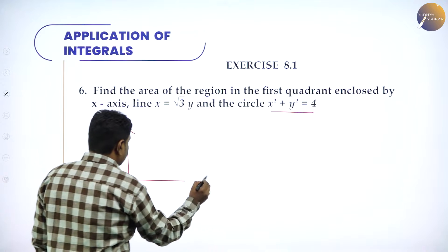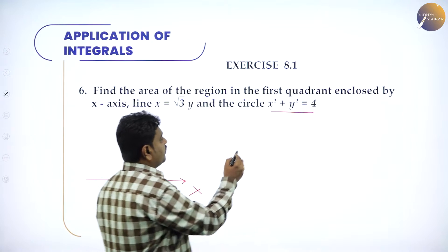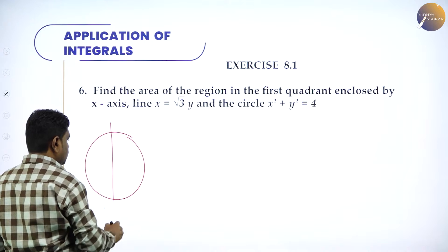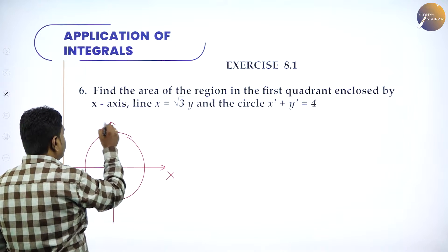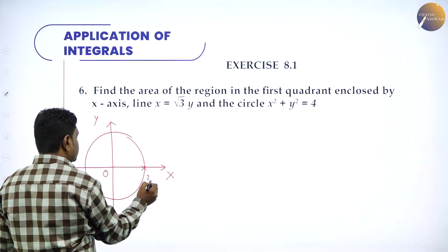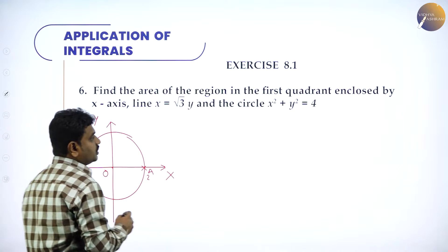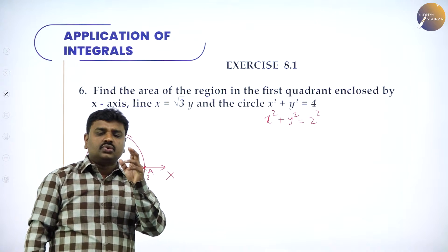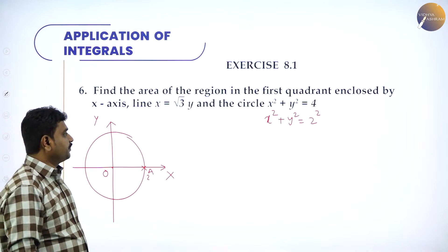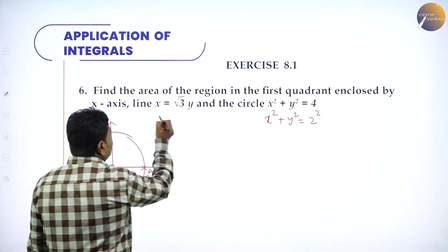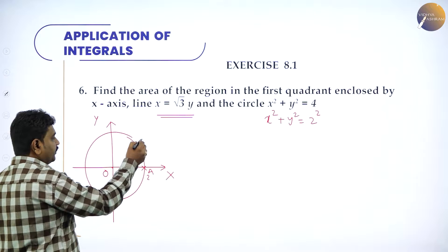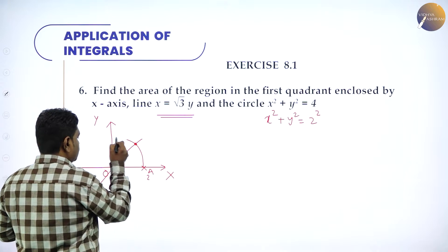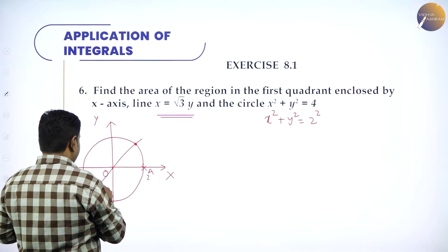The circle x² + y² = 4 can be written as x² + y² = 2², so it has center at the origin and radius 2 units. The line y = √3·x is always a line passing through the origin. One point is at the origin and another point intersects the circle.